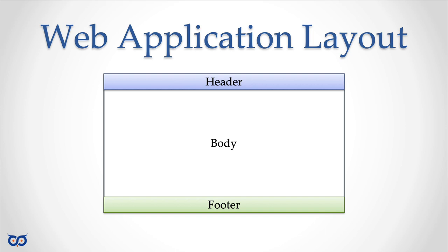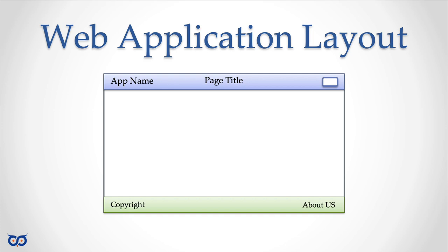Most sites have a header section and a footer with copyright information. You might start adding other things like your application name, usually used to navigate back to the home page regardless of which page the user is on. You might have a page title so users know which page they're on, and some profile buttons or logout buttons on the top right. At the bottom you have copyright and lesser-used links like 'About Us' that you don't need to access often.